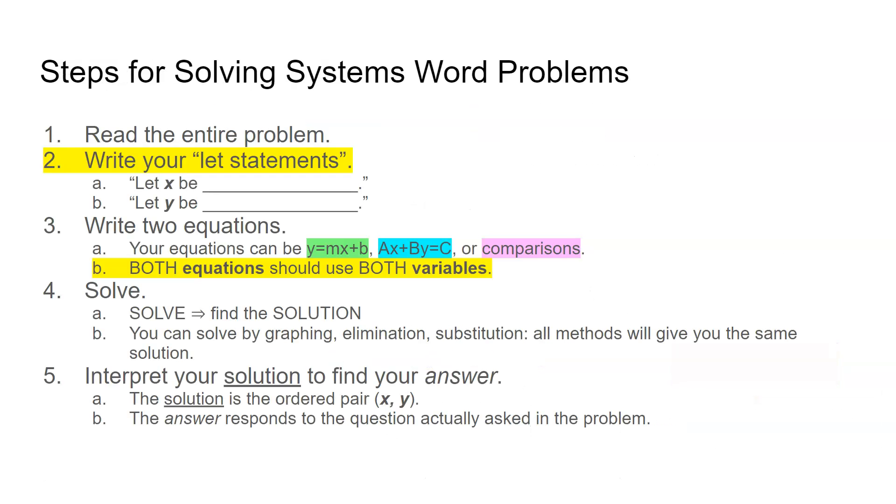Let's review the steps for solving system word problems. You're going to read your problem and write your let statements. Then write your equations. Your equations might be a mixture. You might have slope intercept equations, standard form equations, or comparisons. Usually you only have one comparison. But what's important is that both equations should use both variables. Then you can solve using your preferred method.